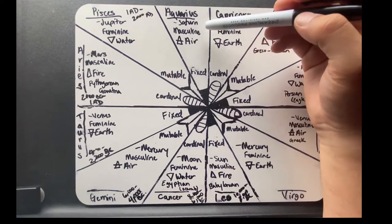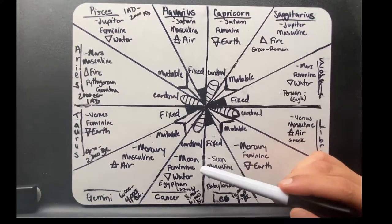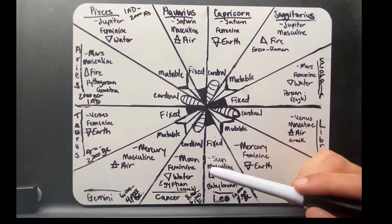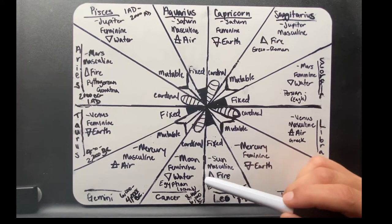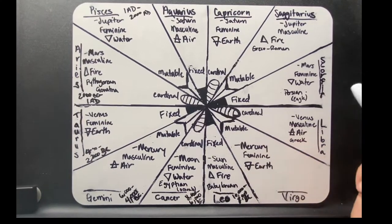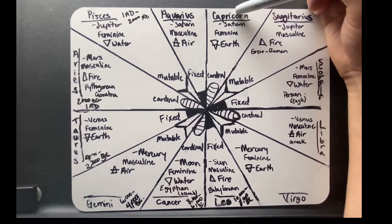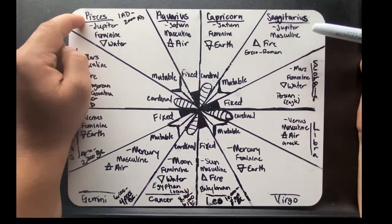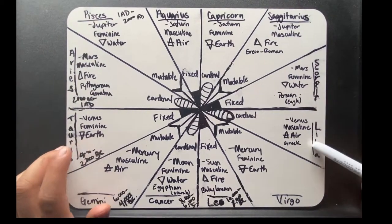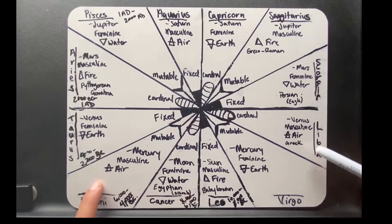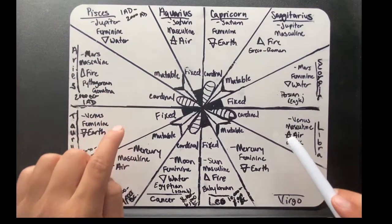Each constellation is ruled by one of the seven moving stars. Apart from the Sun and the Moon, who only rule one constellation, all the planets rule two constellations. So Saturn rules Aquarius and Capricorn, Jupiter rules Pisces and Sagittarius, Mars rules Aries and Scorpio, Venus rules Taurus and Libra, Mercury rules Gemini and Virgo. That's why I laid it out like this, so you can see that.